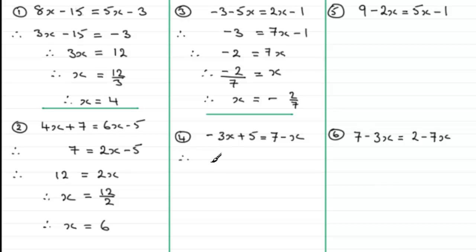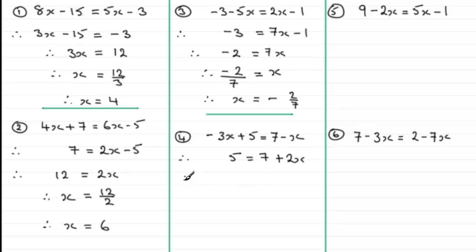For number 4, I need to choose which x term is bigger. We've got minus 3x and minus x. Since minus x is bigger than minus 3x, I'm going to group on the right. I need to get rid of minus 3x by adding 3x to both sides. Adding 3x to minus 3x gives zero, leaving the 5. So we've got 5 equals 7... then adding 3x to the minus x term gives 2x, so 5 = 7 + 2x. To get rid of the 7, I subtract 7 from both sides: 5 take away 7 is minus 2, and 7 take away 7 is zero, leaving 2x.